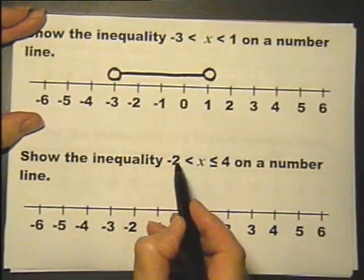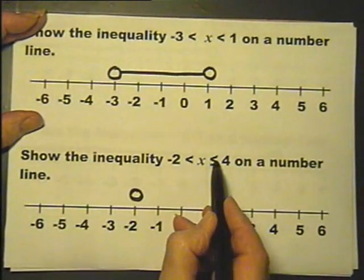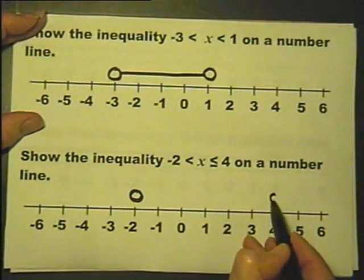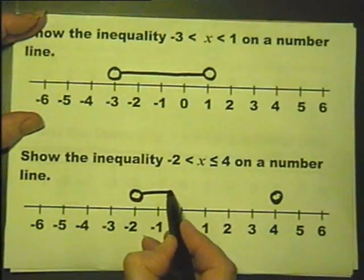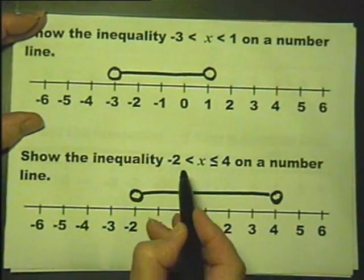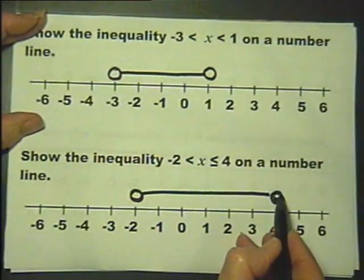x is between minus 2 and 4, so that's the between minus 2 and 4. Doesn't include the minus 2 but it does include the 4.